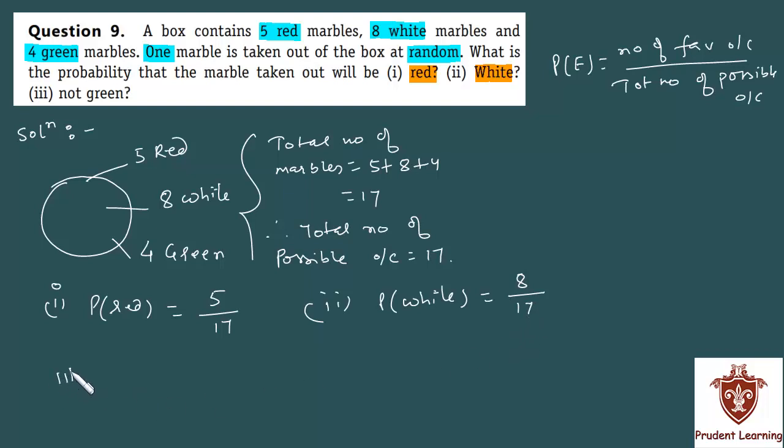Last section is important. Probability that the marble taken out will be not green. Not green means red or white, something. But not green. How do I solve this?